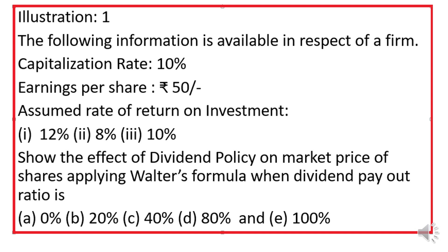We will take up a question to understand better. The following information is available: capitalization rate KE equals 10%, earnings per share EPS equals 50 rupees. Assume the rate of return on investment is: first, 12%; second, 8%; and third, 10%. Based on these three situations, calculate the value of the firm. Apply Walter's formula when the dividend payout ratio is 0%, 20%, 40%, 80%, and 100%.